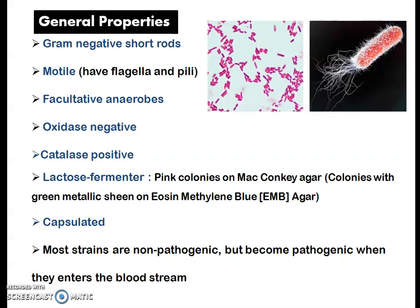E. coli are gram-negative rods. They are highly motile with flagella and pili all over the body. They are facultative anaerobes, oxidase negative, and catalase positive. This is an important property of E. coli because all other members under enterobacteria are catalase negative — only E. coli is catalase positive, and it is a unique feature.